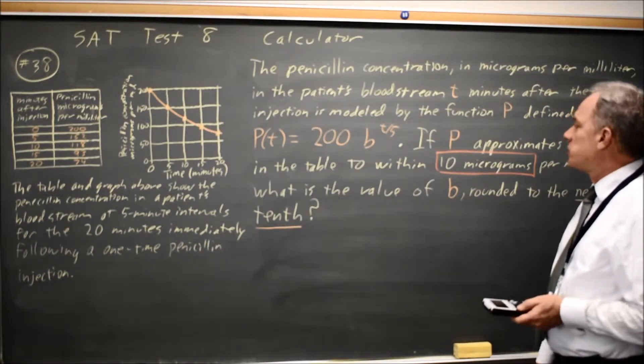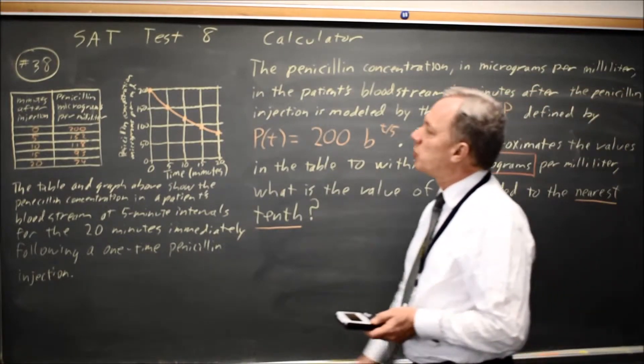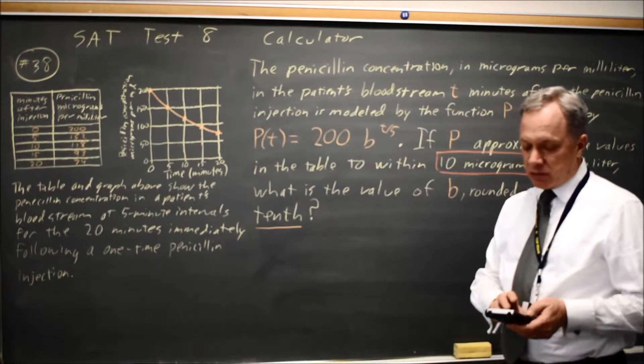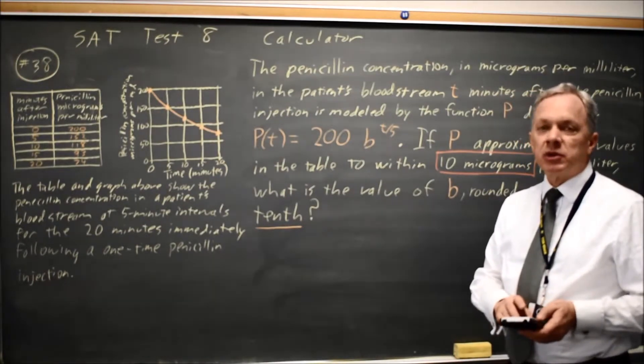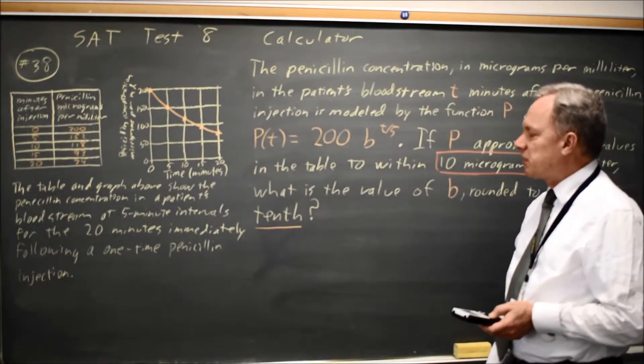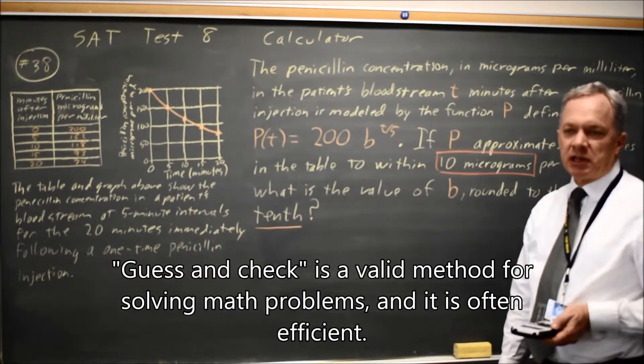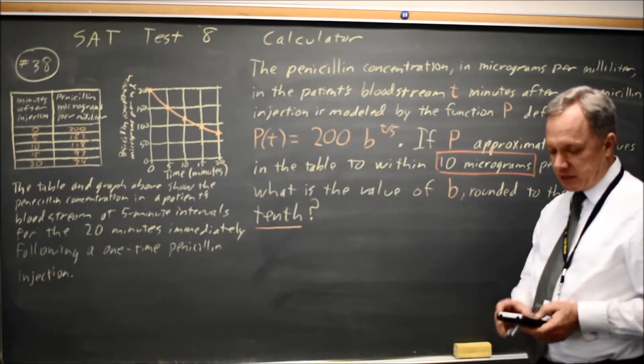So 0.9 is not the correct answer. I know it's going to be a number less than 1, and 0.9 did not work, so let's try 0.8. I could have made an educated guess, but it's not always worth the time to make an educated guess if you have a calculator, and I know the correct answer will be 0.9, 0.8, 0.7, 0.6, 0.5, something like that.